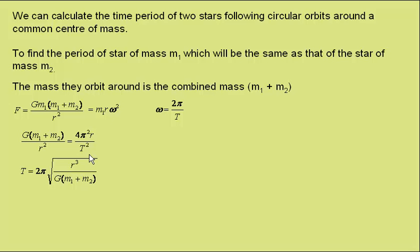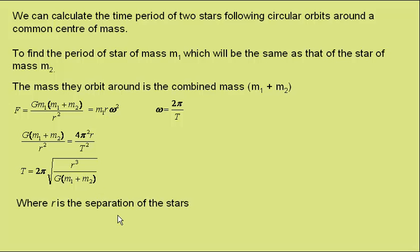Now rearranging for t gives the time period t is equal to 2π times the square root of their separation cubed over the gravitational constant multiplied by the sum of the masses. r, in this case just to stress, is the separation of the stars. It is not the radius of orbit of either of the stars.